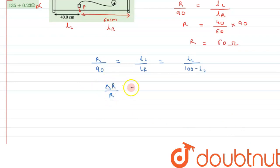Delta R by R equals delta LL by LL, and here it would be plus delta (100 minus LL) by LL. This can be further written as delta R by R...